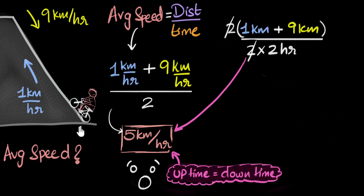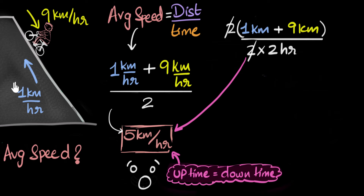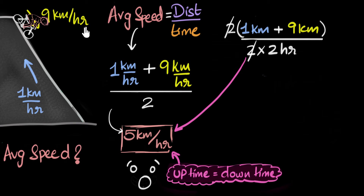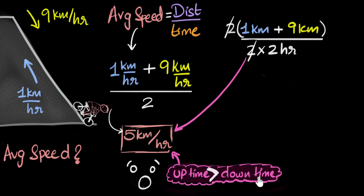But in our example, do you think the uptime is the same as the downtime? The answer is no — while going up he travels super slow, so notice it's going to take him a long time to travel upwards. Once he reverses and comes back down, he travels super fast, so it takes a very small time to come back down. The uptime is not the same as the downtime — it takes him much longer to travel up compared to traveling down. As a result, the answer cannot be five kilometers per hour. That's why this method is wrong.